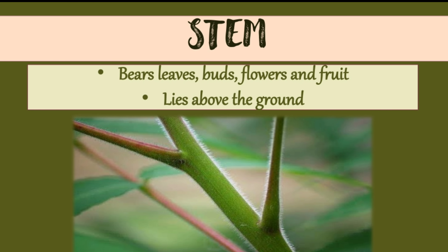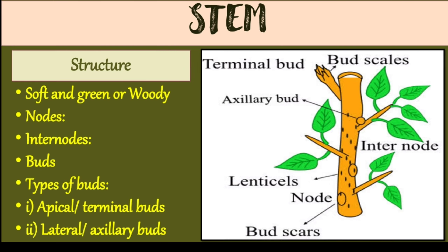The next part of the plant is the stem. The stem bears leaves, buds, flowers, and fruits. It lies above the ground. The stem is usually soft and green in plants, and it is woody in big trees — you have seen that the trunk or stem is woody. The stem has nodes: the place where a leaf or branch arises is called a node.